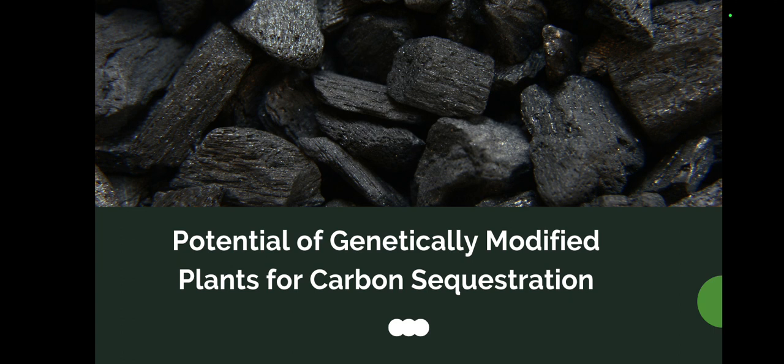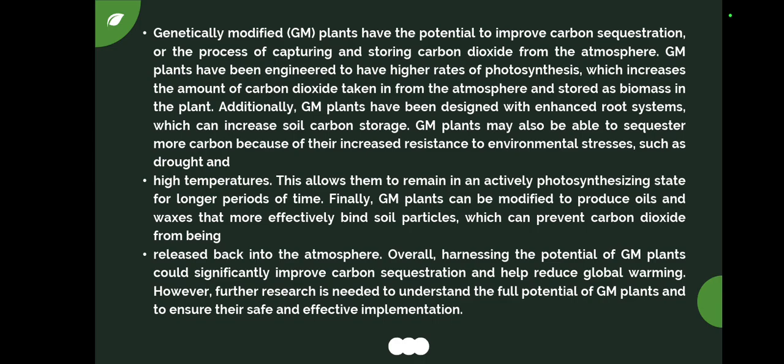Genetically modified plants have the potential to improve carbon sequestration — the process of capturing and storing carbon dioxide from the atmosphere. GM plants have been engineered to have higher rates of photosynthesis, which increases the amount of carbon dioxide taken from the atmosphere and stored as biomass in the plant. In addition, GM plants have been designed with enhanced root systems, which can increase soil carbon storage.